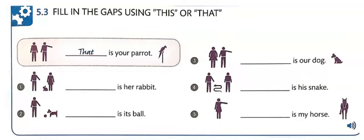Let me play the example first. 'That is your parrot.' Number 1: This is her rabbit. Number 2: This is its ball. Number 3: That is our dog. Number 4: This is his snake. And number 5: That is my horse.